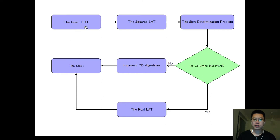In our approach, we firstly define the sign determination problem to recover some columns in the squared LAT. If we can recover M columns in the LAT, we can recover the real LAT and derive the S-Box. If we don't have M columns recovered, we can still apply our improved GD algorithm to reconstruct the S-Box.